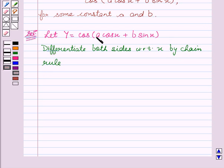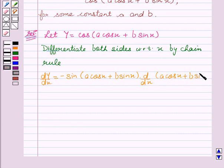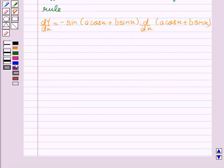We will differentiate both sides with respect to x by chain rule. We get dy by dx equal to minus sin(a cos x + b sin x) into d/dx of (a cos x + b sin x).